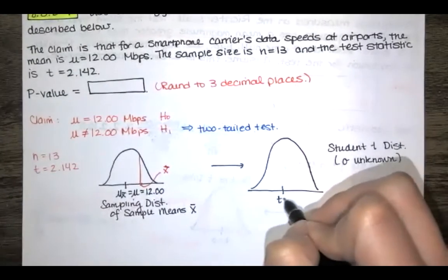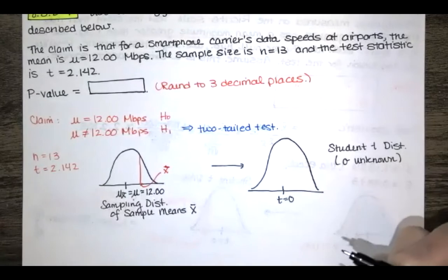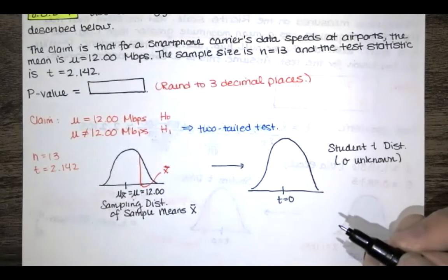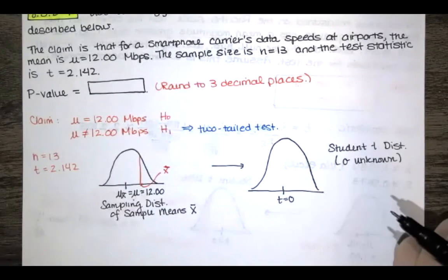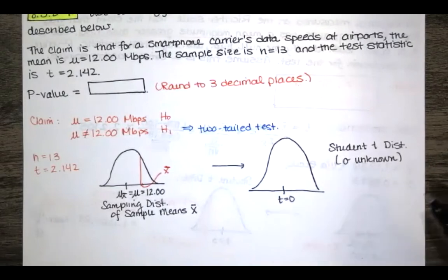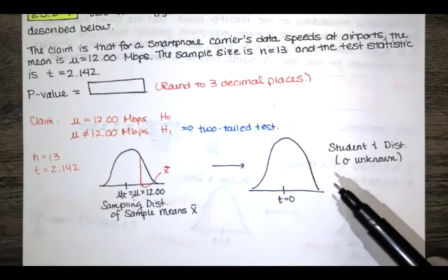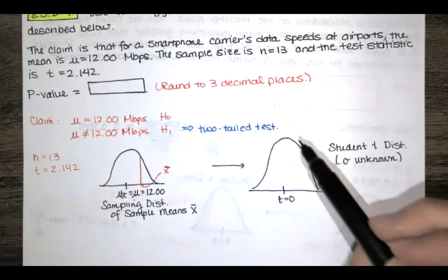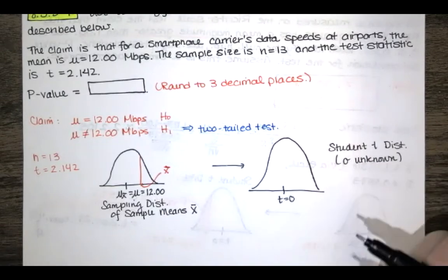Now student t distribution looks a lot like a standard normal distribution it has a mean of zero but the variance or the standard deviation is not equal to one. The variation is different. These tend to be a little bit wider and I didn't really draw a very good student t distribution this time. It should be more symmetric than the one I've drawn here.